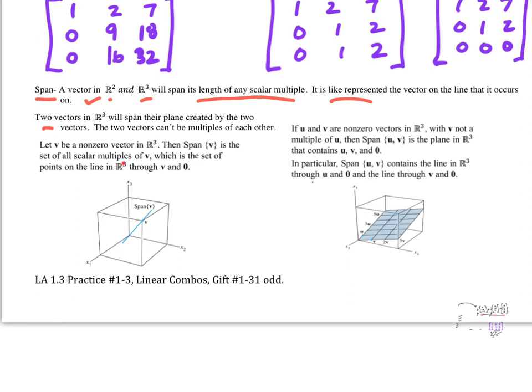which is the set of points on the line in R3 through V and the zero vector. So if I have this vector V, so I go from here to here, the span of it is going to be the line that it occurs on. So it's going to go on forever like that. So that's the span.